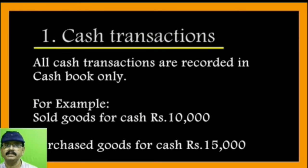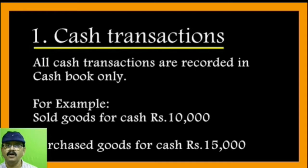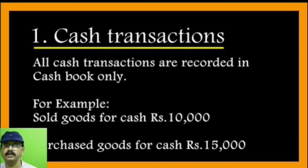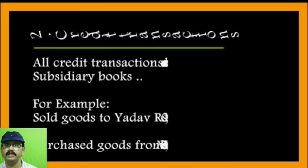The first one is cash transaction. All cash transactions are recorded in the cash book only. For example, sold goods for cash rupees 10,000 and purchased goods for cash 15,000 — these two are examples of cash transactions.